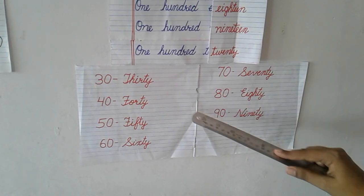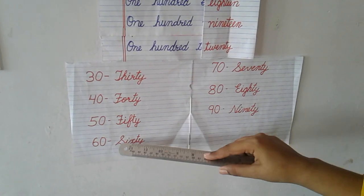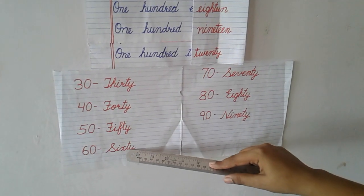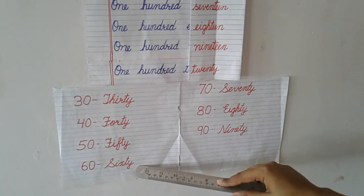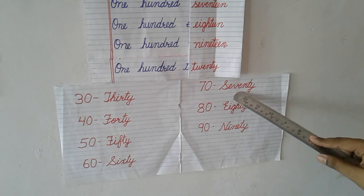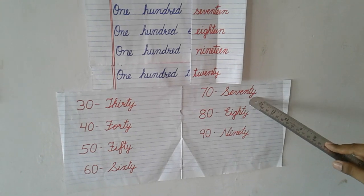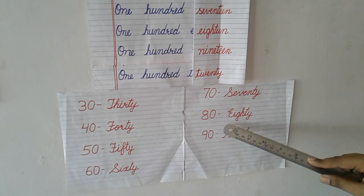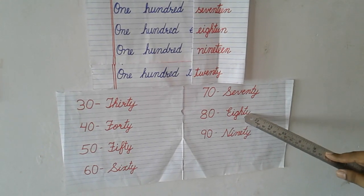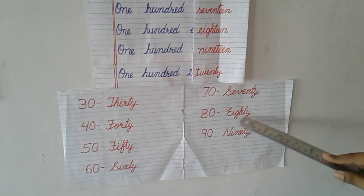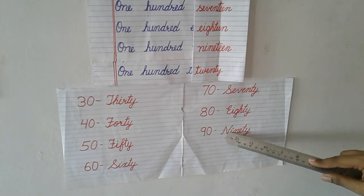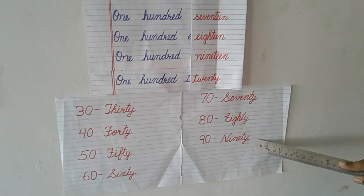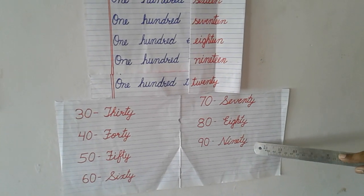Previously you have learned these spellings. SIXTY. SEVENTY. EIGHTY. NINETY.